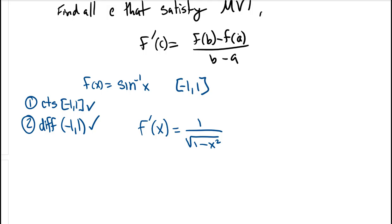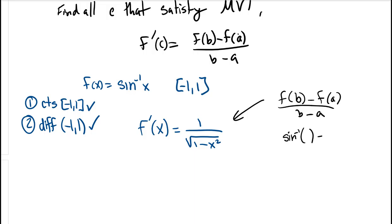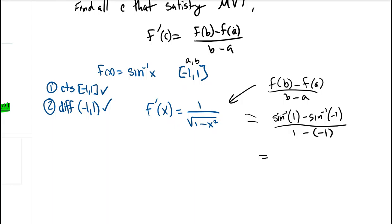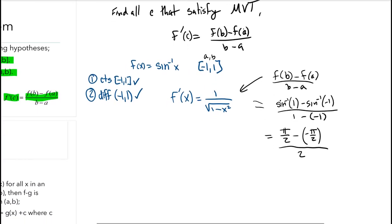Now we need to find the slope of the secant line: f(b) minus f(a) all over b minus a. Our f is arcsin, so that's arcsin(1) minus arcsin(-1) over 1 minus (-1). Arcsin(1) = π/2, arcsin(-1) = -π/2, and 1 minus negative 1 is 2. So we have π/2 plus π/2 over 2, which is π over 2. That's the slope of the secant line.